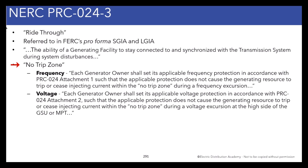The standard defines a no-trip zone, one for frequency and one for voltage. The important phrase is: does not cause the generating resource to trip or cease injecting current. With inverters, they can not only trip offline, but they can also enter a condition known as momentary cessation, where the inverter is still connected to the system but ceases injecting any current. If the generating facility enters the no-trip zone with respect to frequency, it must stay online.